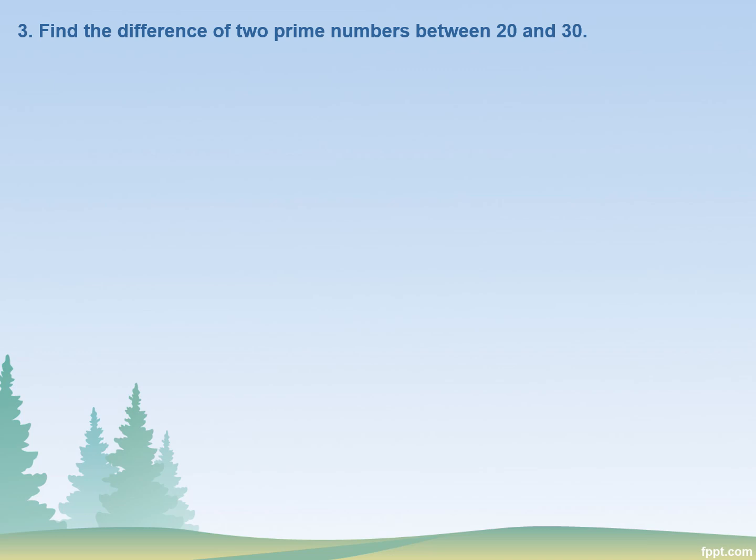As we already discussed in our previous videos, prime numbers are those numbers that are only divisible by themselves and by one. So we have to jot down all the prime numbers that exist between 20 and 30.